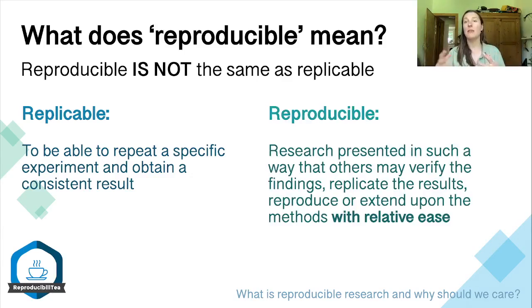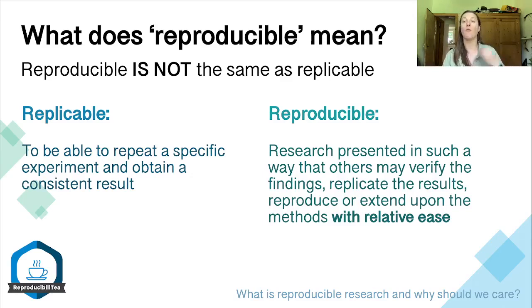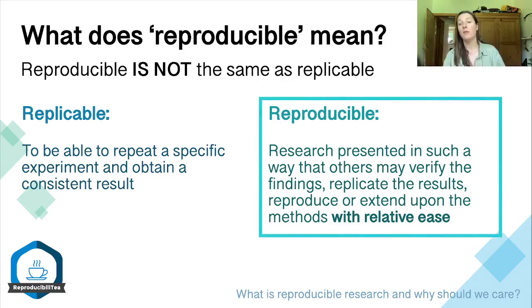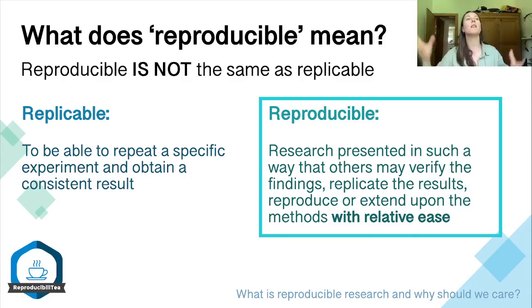Reproducibility actually refers to the entire research process. It involves research that is presented in such a way that others may verify the findings, replicate the results, and reproduce or extend upon the methods with relative ease. So reproducible research means the entire scientific process — from hypothesis generation to the interpretation of results — is clear, open, and reproducible.